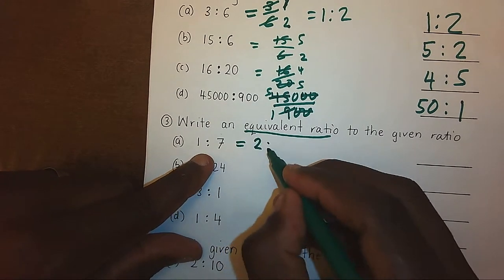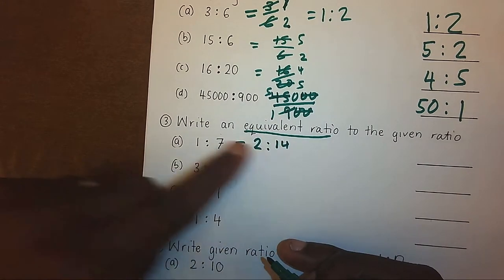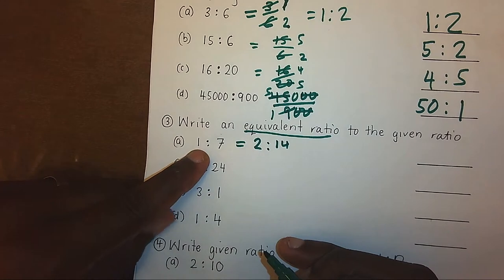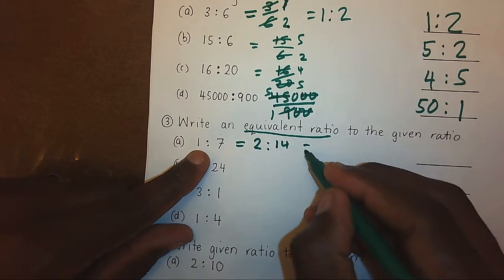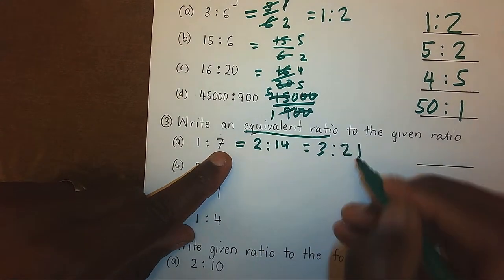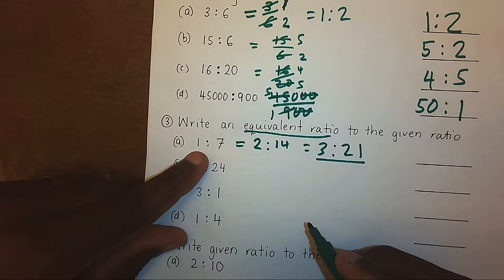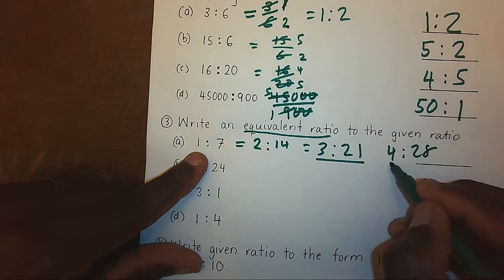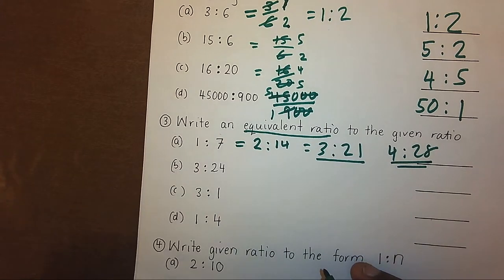2 ratio 14 is an equivalent ratio to 1 ratio 7. 3 ratio 21 is also another equivalent ratio. 4 ratio 28 is another equivalent ratio. We can have so many other equivalent ratios.